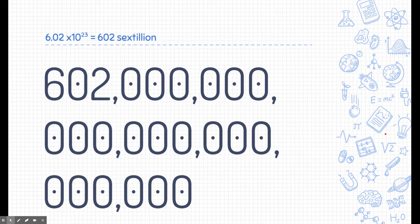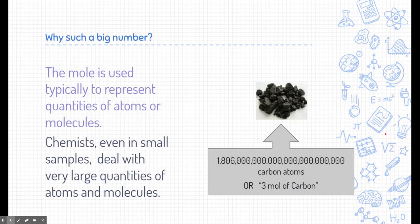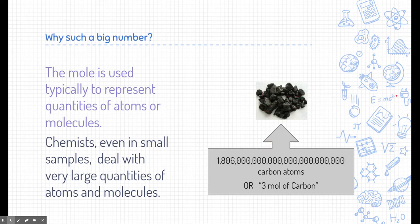This number is practically unfathomable to us because it's not in the range of numbers we see every day. I recommend finding a YouTube video called 'How Big is a Mole' by TED-Ed — it does a really good job of explaining this number and giving perspective on how big it actually is. Take a look at this tiny pile of carbon. In that tiny pile that could fit in my hand, there are an almost uncountable number of atoms, so it's a lot easier to chunk that number together and call it a mole. This is actually three moles of carbon, which is a lot easier to deal with.